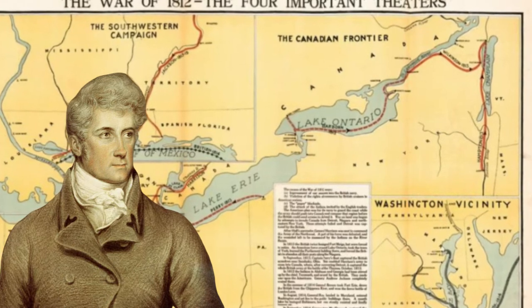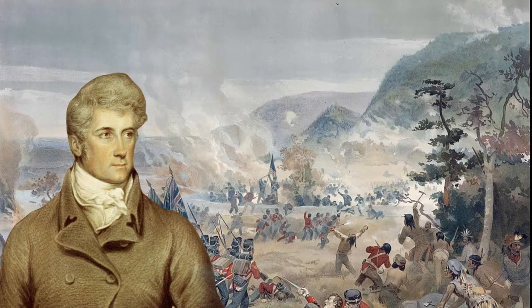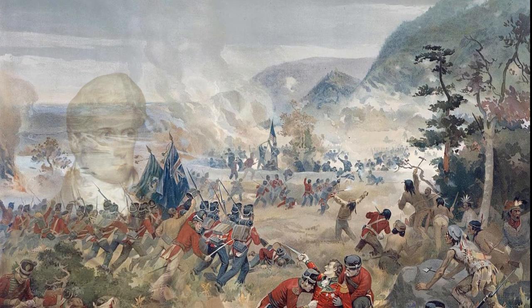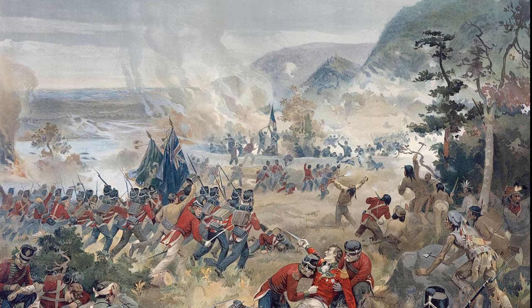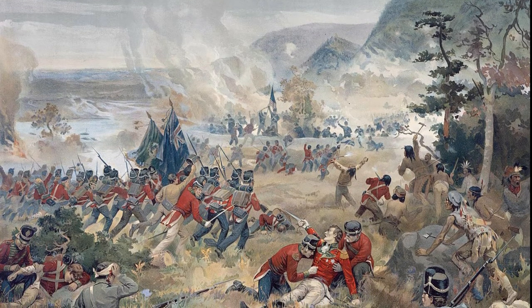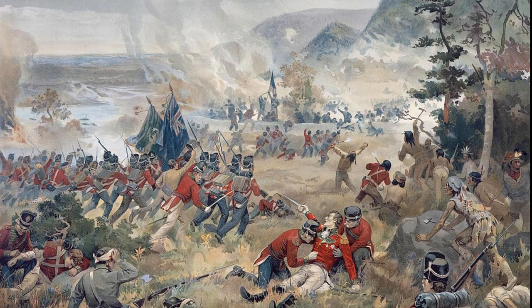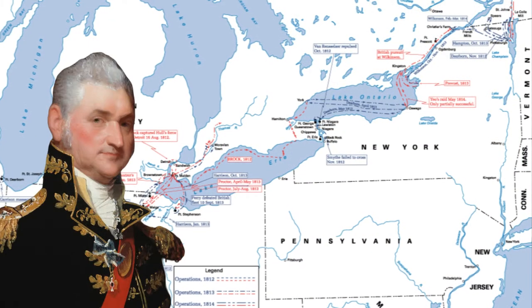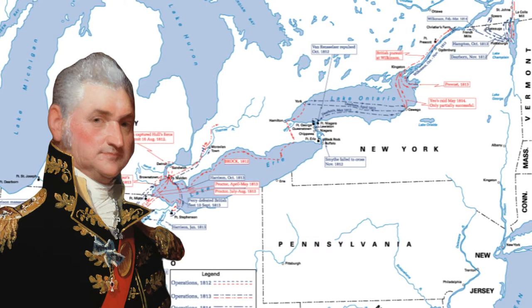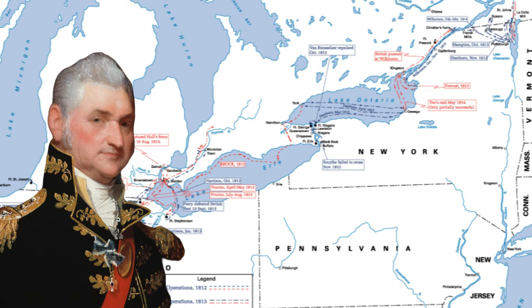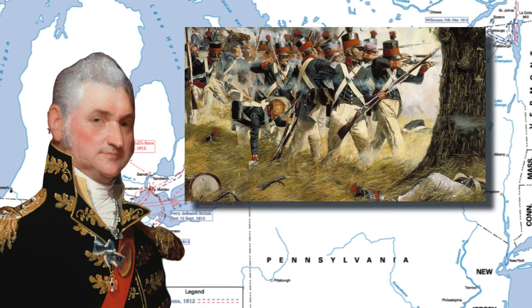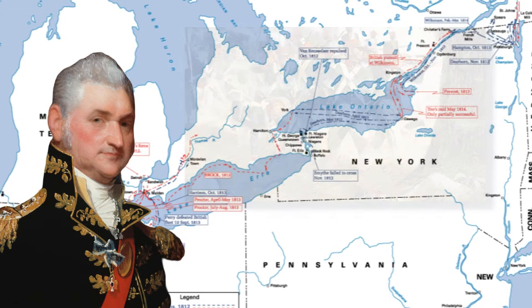Further east, General Stephen Van Rensselaer prepared an assault on Queenston Heights on the Canadian side of the Niagara River, but 950 U.S. troops were driven down from the heights and captured after New York militiamen refused to leave American territory to aid them. Roughly 300 Americans were killed or wounded while the British suffered about 100 casualties. In the third prong, General Henry Dearborn marched at least 6,000 troops from Albany to Plattsburgh, New York, aiming to capture Montreal, but again state militiamen refused to cross into Canada. After minor skirmishes, including one where Americans accidentally fired on each other in the dark, the force retreated without entering Canada.